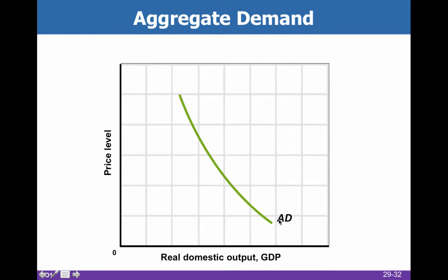Notice that the A in aggregate is a big important thing. We've got real GDP on the horizontal axis and price level on the vertical axis. As the price level falls, aggregate demand will increase. That change in price gives us movement along an existing aggregate demand curve, which is different from a shift of aggregate demand, where the whole curve moves to the right or to the left.